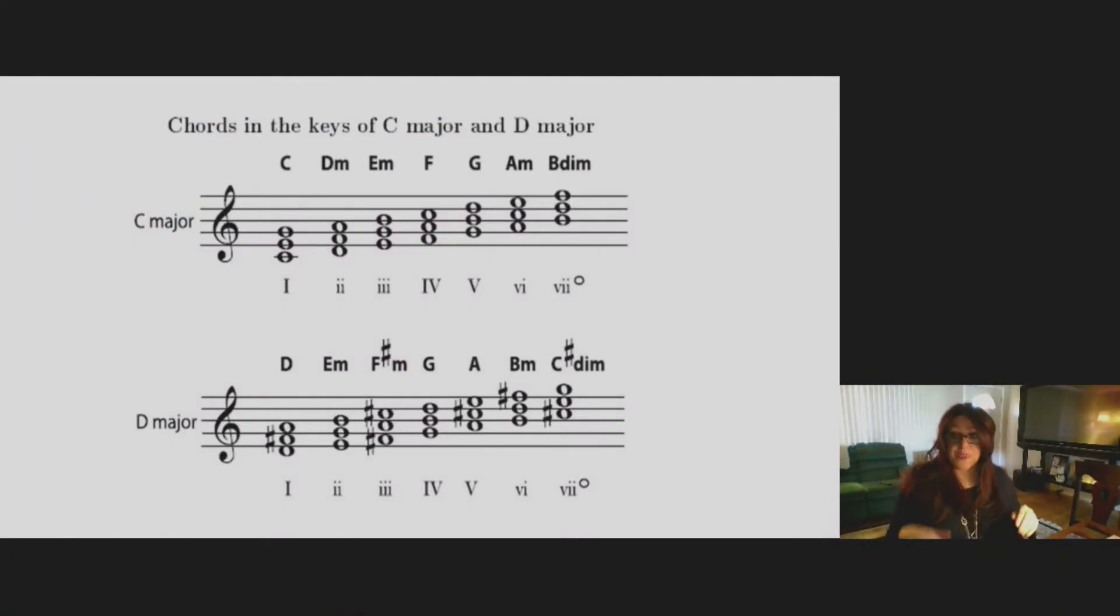So here are your chords in the key of C. Some are major, some are minor, and one of them is diminished. Here's the notes as they fall on the staff. This is the one chord. Okay, so you have the root, the third, and the fifth. Do, mi, sol, mi, do. That's major.